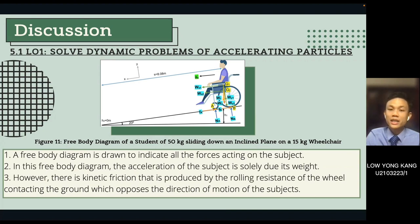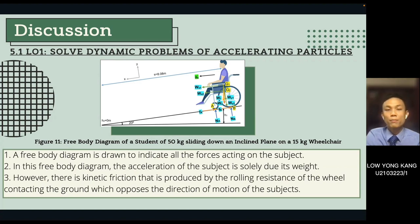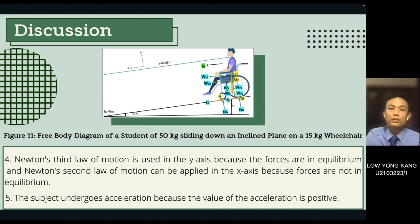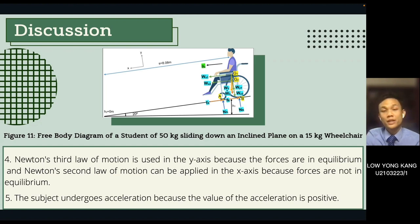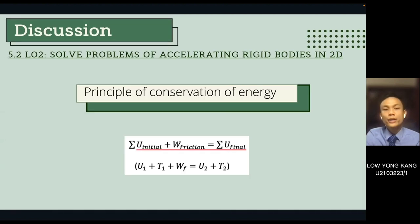In the free body diagram, the acceleration of the subject is due to its weight. However, there is rolling friction produced by the wheel's contact with the ground, opposing the direction of motion. Newton's third law is applied in the y-axis where forces are in equilibrium, and Newton's second law is applied in the s-axis where forces are not in equilibrium. The positive acceleration value confirms the subject is accelerating. The principle of conservation of energy is then applied to solve LO2.